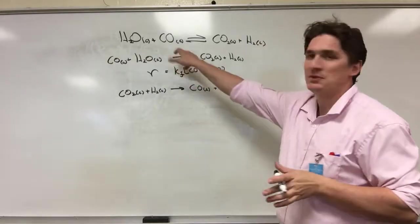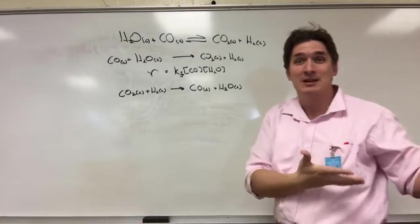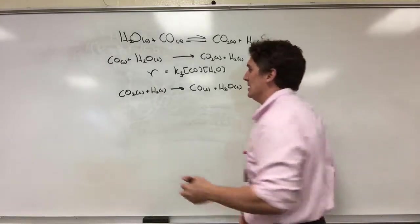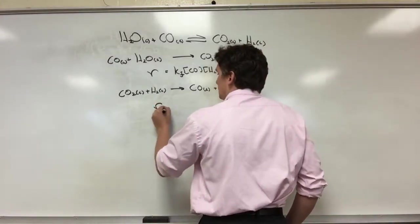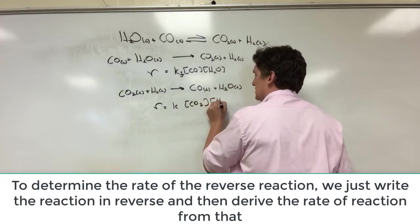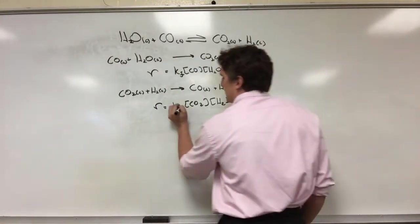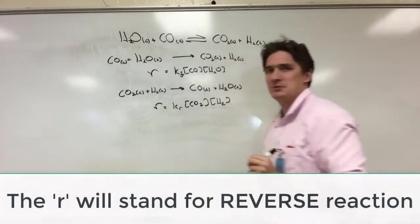The point is that if it's elementary in the forward direction, it has to be elementary in the reverse reaction. Because you're just backtracking, taking the same steps backwards. And so here we have R equals K concentration of CO2 concentration of H2. We're going to designate this K with an R to designate the reverse reaction.